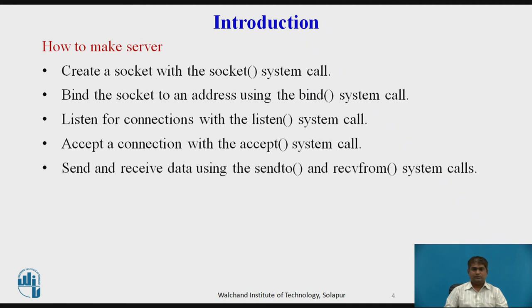Here are some steps involved in establishing a socket on the server side. First, create a socket with the socket system call. Then bind the socket to an address using the bind system call. For a server socket on the Internet, an address consists of a port number on the host machine. Listen for connections with the listen system call. Then accept a connection with the accept system call — this call typically blocks until a client connects with the server. Finally, send and receive data using read and write system calls or send-to and receive-from functions.